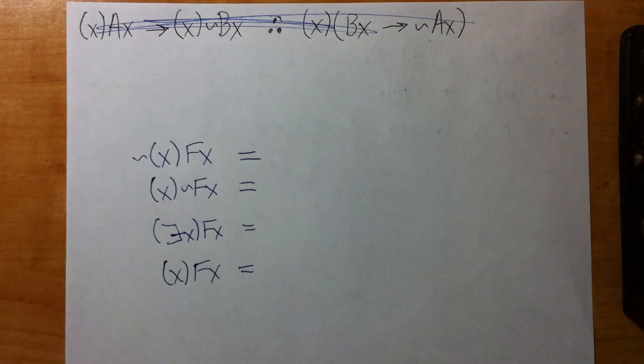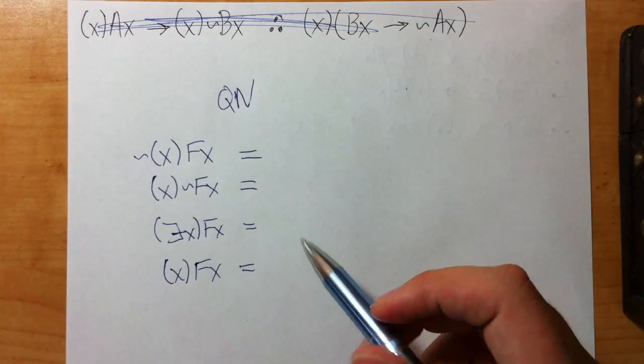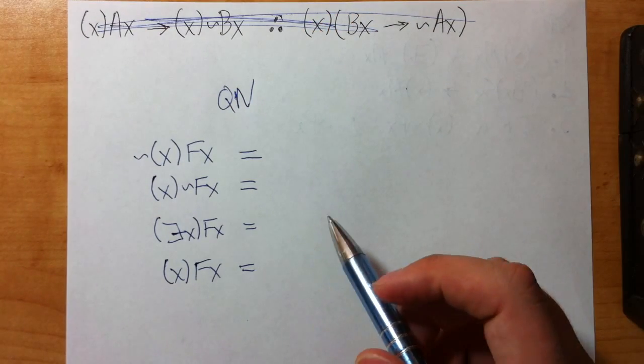Okay, so this is the last proof video. We'll cover a little bit of QN. We got cut off the last one. And then we'll talk about some RA and CP problems with the new rules.